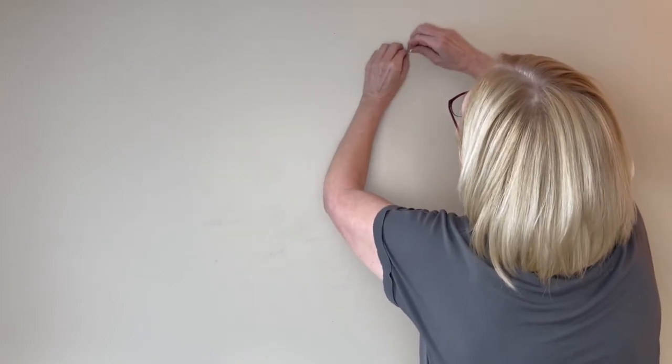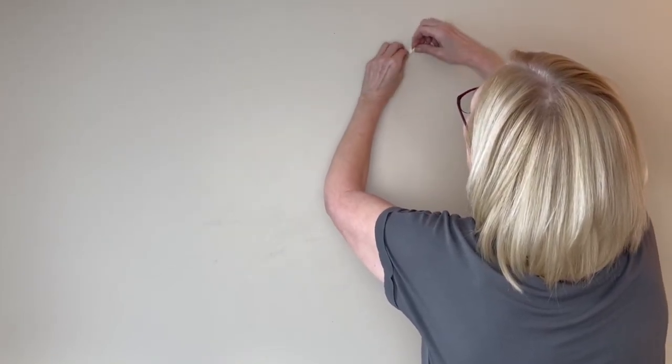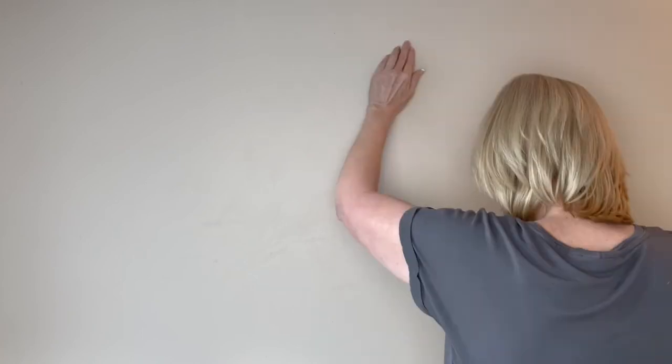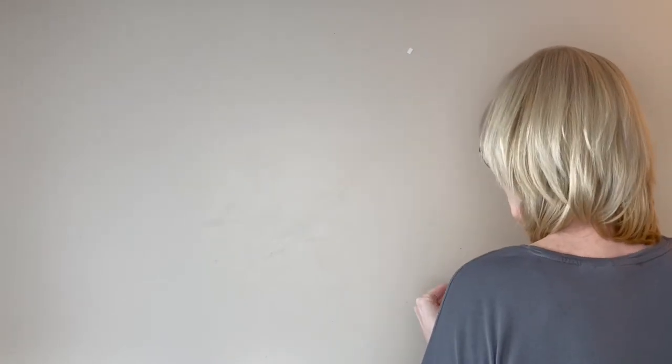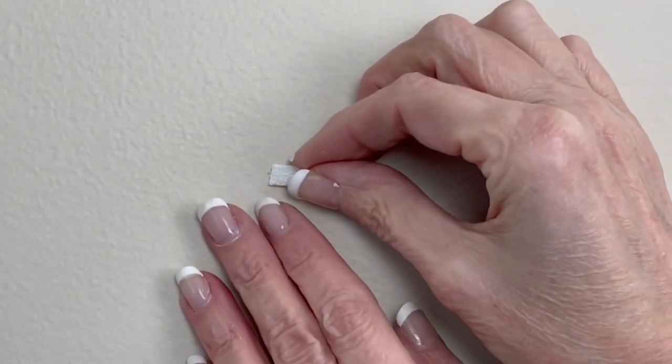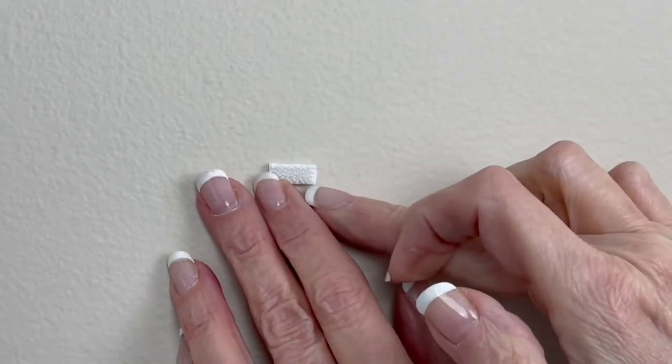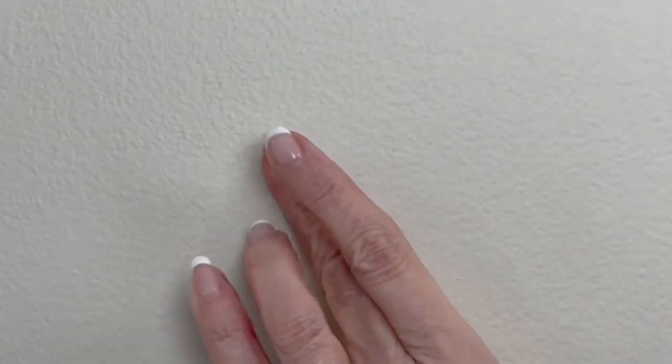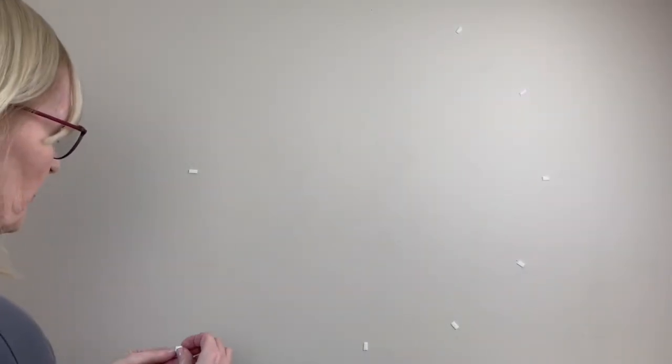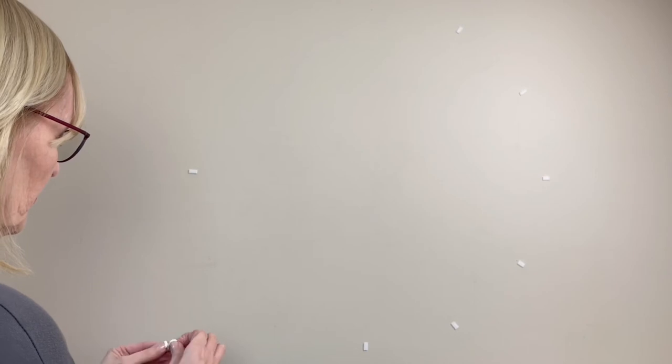Now we're going to use all those little half inch markings that we made to place the velcro all the way around. Just peel off the back and stick them right on. Just a quick close-up of the process. I actually read the directions on the command strips, and each one of these you're supposed to press into place for 30 seconds. I didn't do that, but probably a good idea.